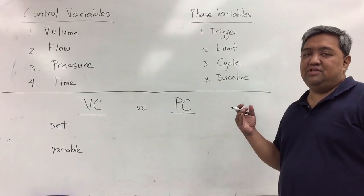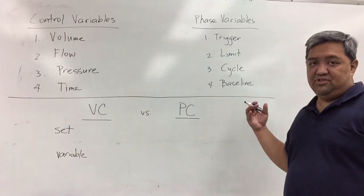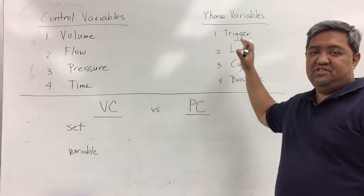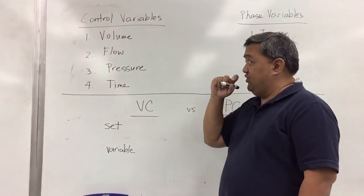In mechanical ventilation there are two types of variables that you have to consider. One is the control variable and then the other one is the phase variable. Let's take a look at the control variables first.